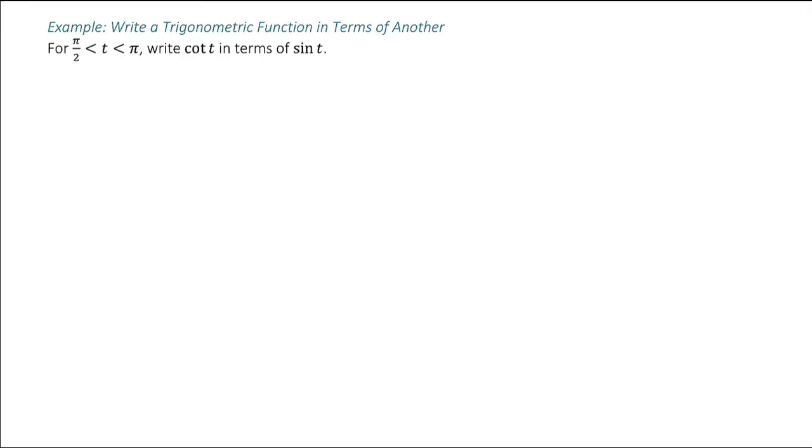So what we're going to do is start with an identity that involves cotangent. I'm going to use the Pythagorean identity: 1 plus cotangent squared of t is equal to cosecant squared of t.